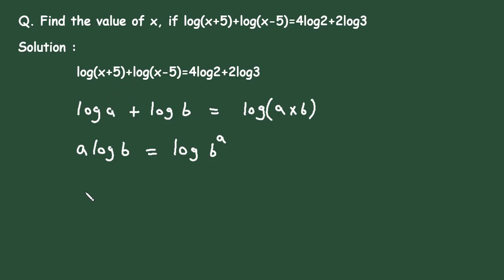Let's put the formula. So this will be log(x+5)×(x-5), x-5, is equal to, now here this term will be log 2 to the power 4 plus log 3 to the power 2.